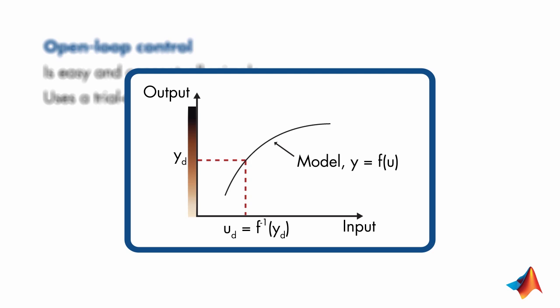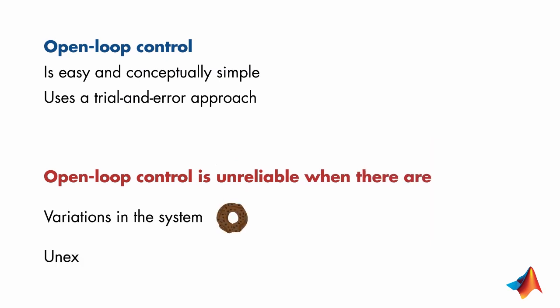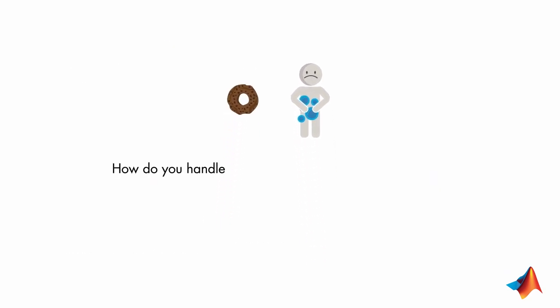However, when there are variations in the system or unexpected events, open loop control is unreliable. So the question is, how do we handle the shortcomings of open loop control? We'll answer this question in the next video where we'll discuss feedback control.